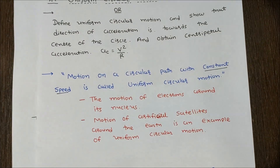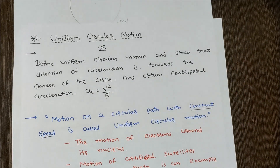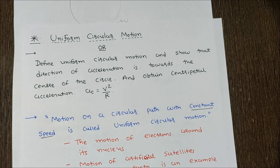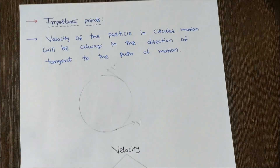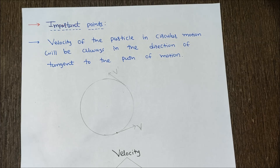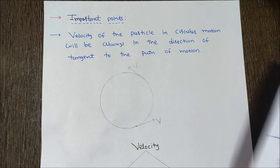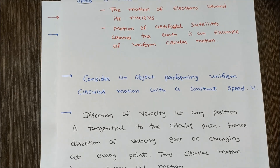In uniform circular motion, the tangential component of acceleration is zero, and there is only the normal component of acceleration — called centripetal acceleration — whose direction is always towards the center, because in uniform circular motion only the velocity direction is changing. These are the key points to remember: velocity is always in the direction of the tangent.